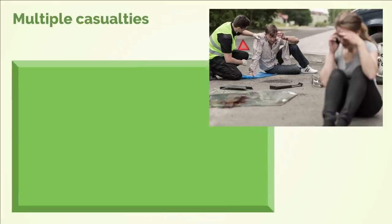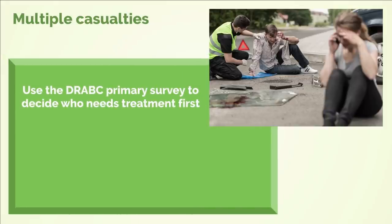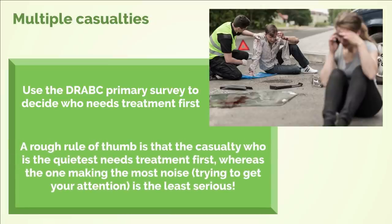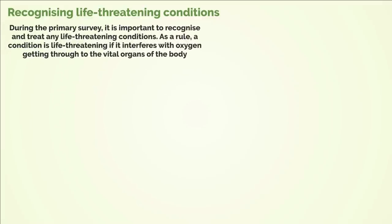Multiple casualties: use the DRABC primary survey to decide who needs treatment first. A rough rule of thumb is that the casualty who is the quietest needs treatment first, whereas the one making the most noise, trying to get your attention, is the least serious. Recognising life-threatening conditions: during the primary survey it is important to recognise and treat any life-threatening conditions. As a rule, a condition is life-threatening if it interferes with oxygen getting through to the vital organs of the body.